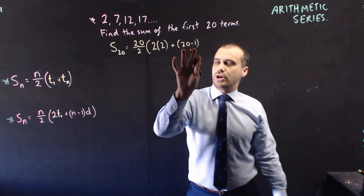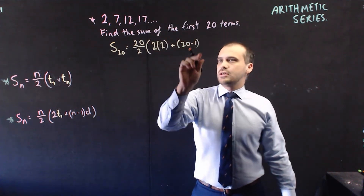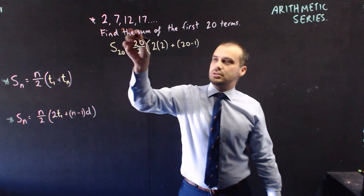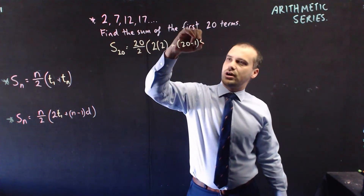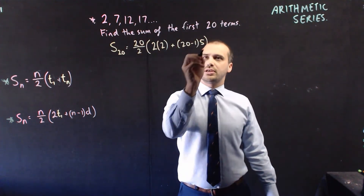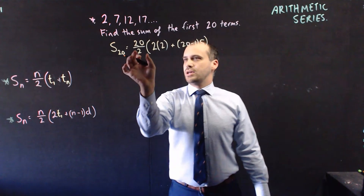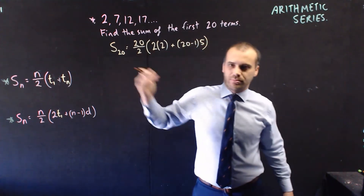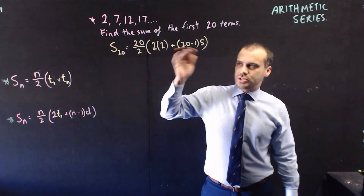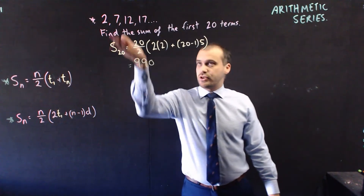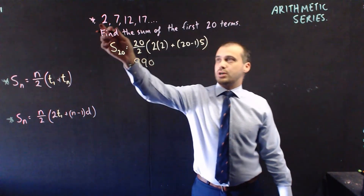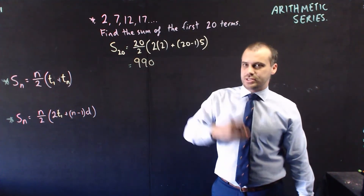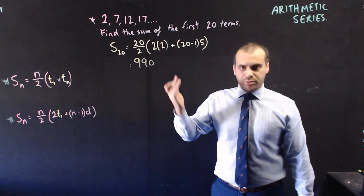Times the common difference, which is 5. And make sure you get your brackets right — it's this multiplied by all of that in brackets. I'm just going to do that in one shot. So the sum of the first 20 terms of this sequence is 990. Pretty straightforward.